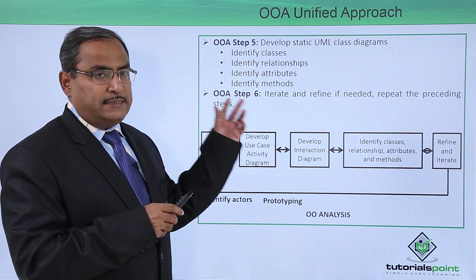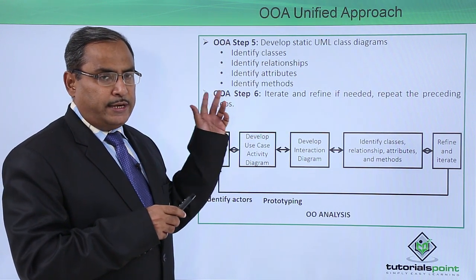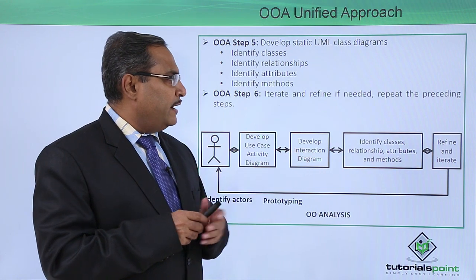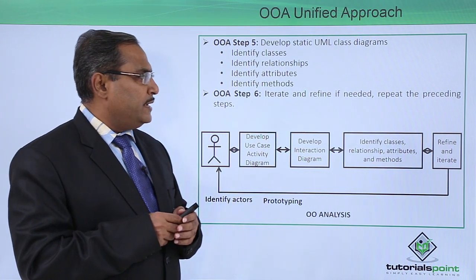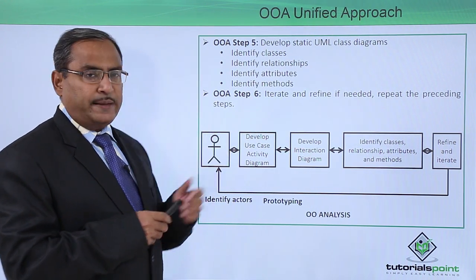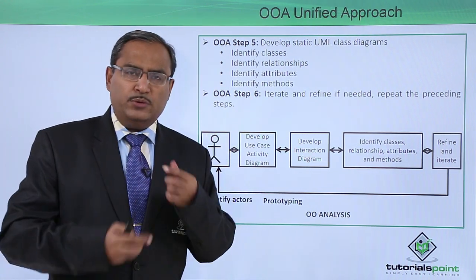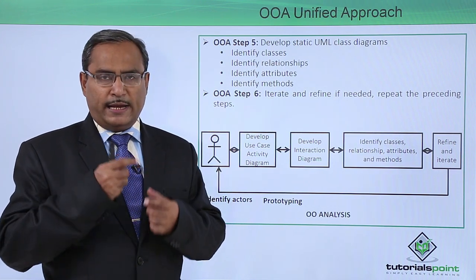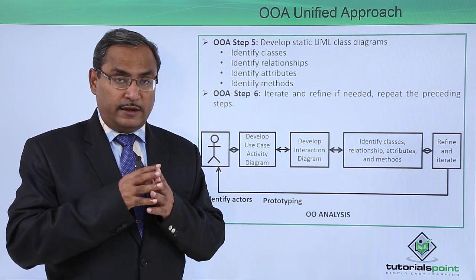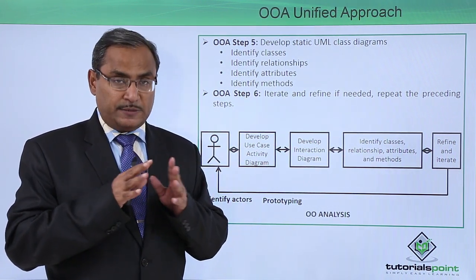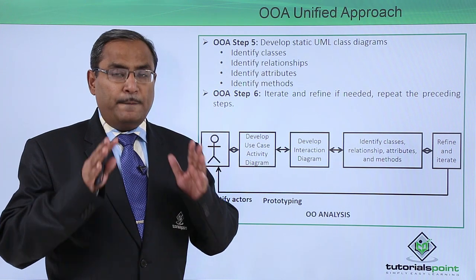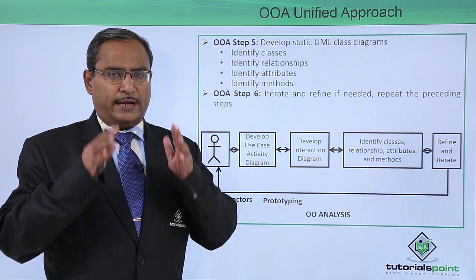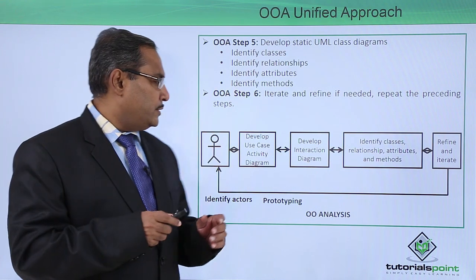OOA Step 6: Iterate and refine if needed, and repeat the preceding steps. We go through Steps 1 to 5 again and again until the refinement has been completed. Once the system is stable and meets requirements, the Object Oriented Analysis phase is complete.